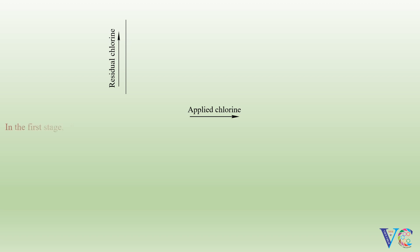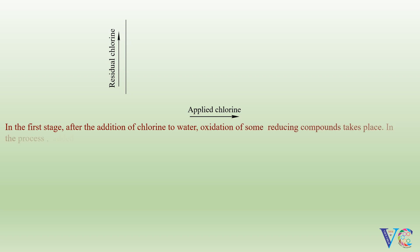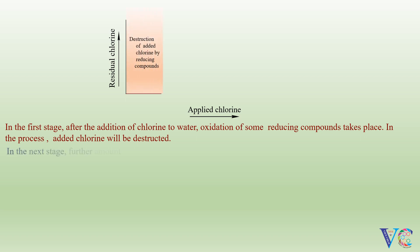With the help of the following graph, breakpoint chlorination is explained. Residual chlorine vs. applied chlorine. In the first stage, after the addition of chlorine to water, oxidation of some reducing compounds takes place. In the process, added chlorine will be destructed. In the next stage, a further amount of added chlorine reacts with ammonia to form chloramines.